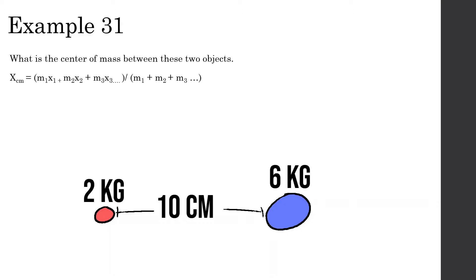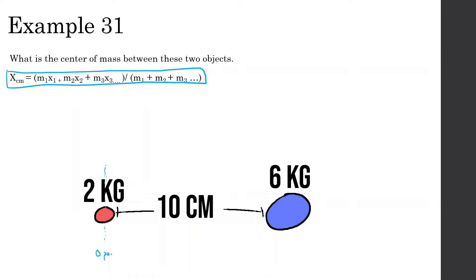Let's look at this first example. This is the formula that's on your formula sheet. Center of mass equals m1x1 plus m2x2 plus m3x3, and so on, divided by all the masses. So what is the center of mass of these two objects? We have a 2-kilogram object and a 6-kilogram object. We're first going to establish a zero point — I like to always put the zero point all the way to the left.